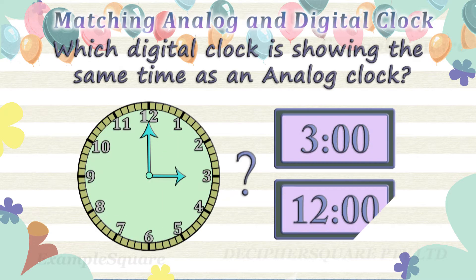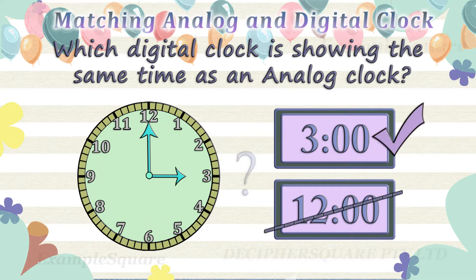Which digital clock is showing the same time as an analog clock? Time in analog clock is 3 o'clock.